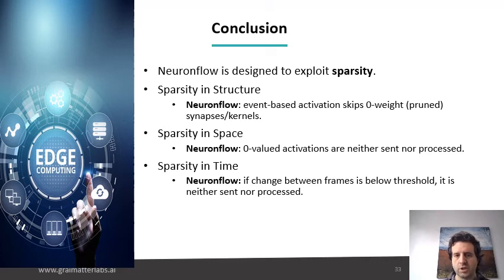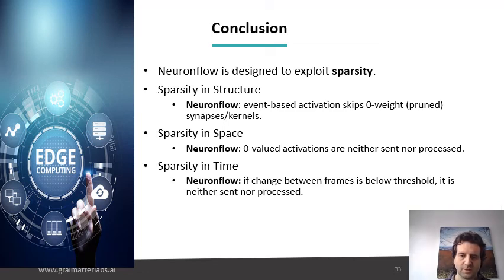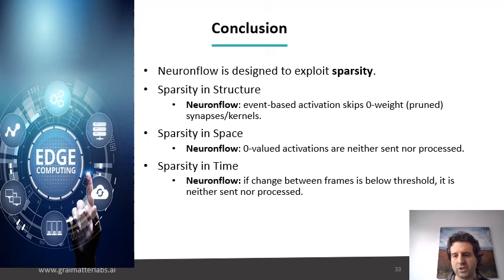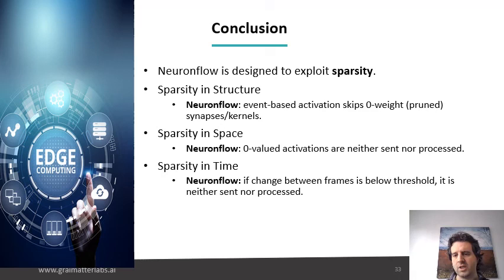So in conclusion, the NeuronFlow architecture is designed to exploit sparsity. In that sense it is a neuromorphic architecture, because sparsity — we believe — is the essential secret sauce of the brain. The fact that we only process change and not the whole information all the time. It also has a structure in our neural network execution — our SparNet — that is very similar to a spiking neural network in that all the neurons have internal state and the communication goes through events.